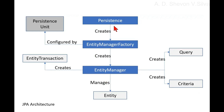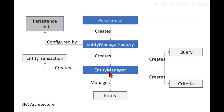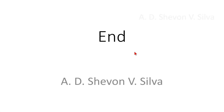In summary: Persistence creates the entity manager factory, which is configured by the persistence unit. The entity manager factory creates the entity manager. The entity manager creates the entity transaction, creates the query, creates the criteria, and manages the entity. This is the end of the presentation. Thank you very much for watching.